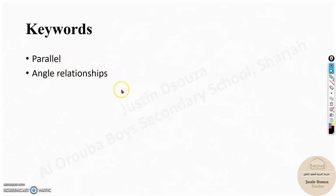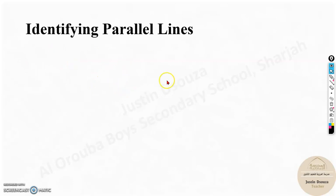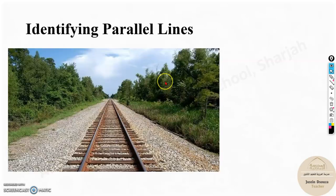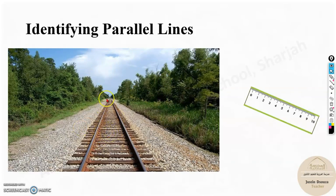In this lesson, we will mainly focus on the converse of the theorems. Before we move on, we need to identify parallel lines. The railway track lines are always parallel to each other. Also, a ruler — if it's a proper ruler — then these sides will always be parallel to each other.